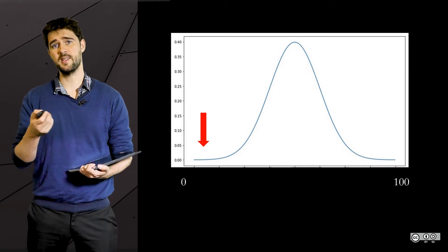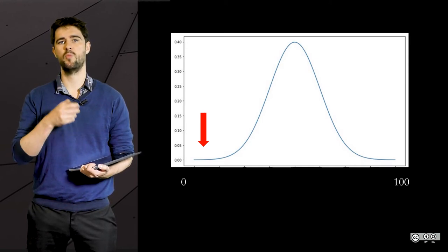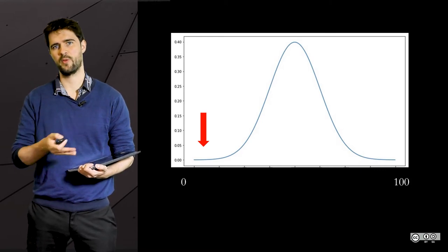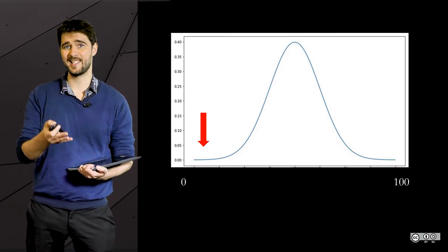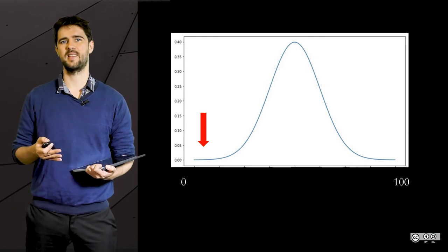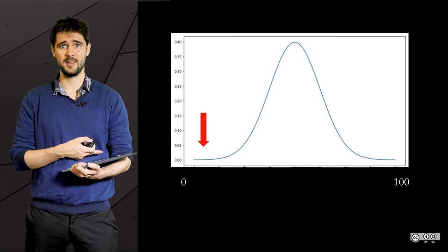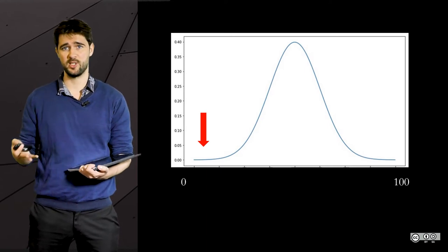This curve is called a normal distribution. The highest values on the y-axis are the most likely to occur. The fact that you were here at the bottom is pretty unlikely due to this distribution, but it happened.